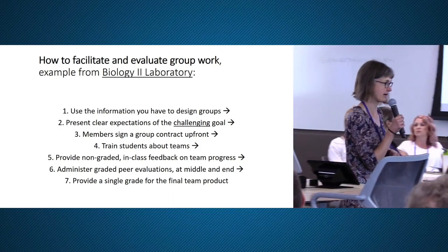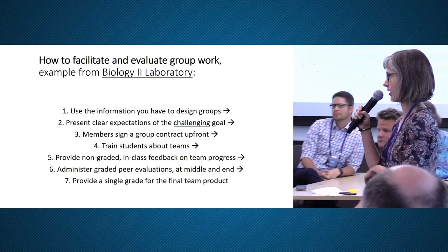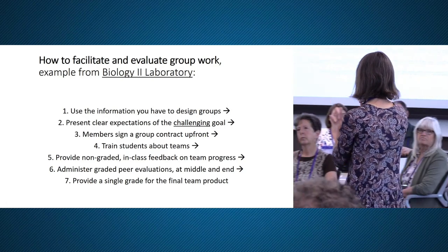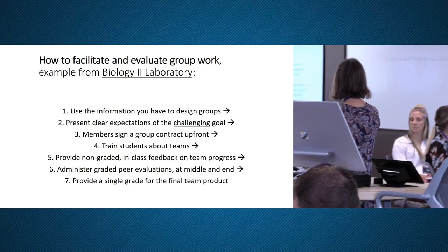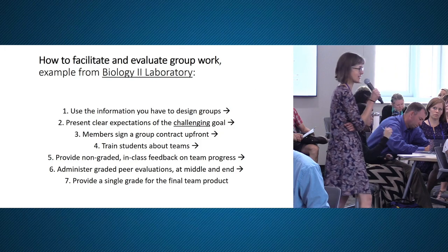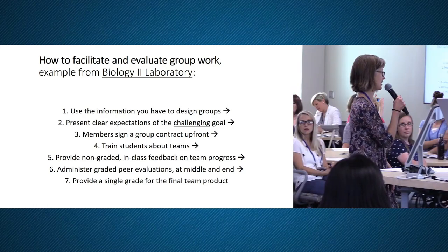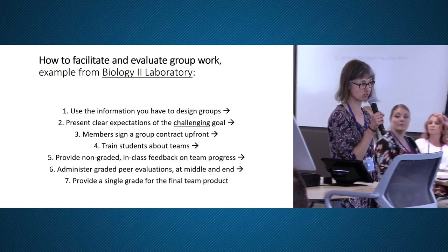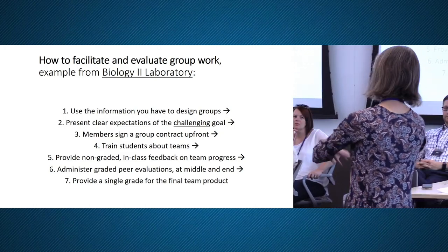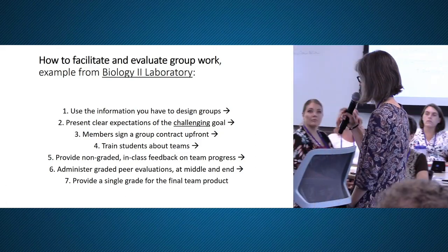We assign students upfront to groups of three or four, and students stay in those groups all semester — they're not allowed to change groups when the going gets tough. We use information from online rosters to minimize isolating students of particular backgrounds. In Biology Two labs, students have two main group assignments: writing a research proposal with a well-researched hypothesis and a well-designed experiment, then conducting that experiment over many weeks, and finally doing a research presentation sharing their experience with the process of science.